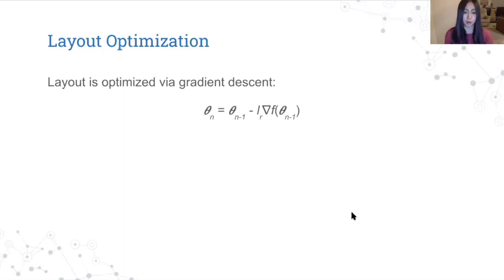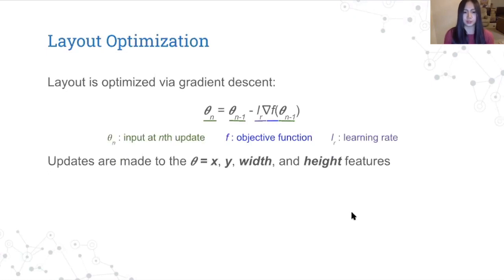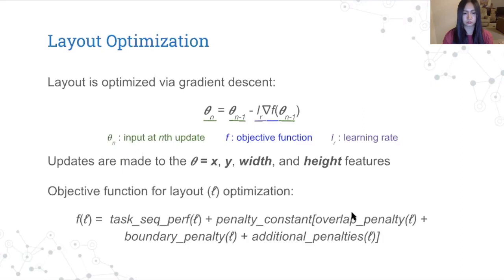Once we have a trained model, we can move on to layout optimization. We use gradient descent, which iteratively updates the input to minimize the objective function. The equation for a single update is given here. So theta is the input for the info update step, and it's obtained from theta at the previous step, updated by the gradient of the objective function multiplied by the learning rate. For our case, theta is the layout features, so the size and location of each element, as well as the corresponding container layout features for grouped elements.